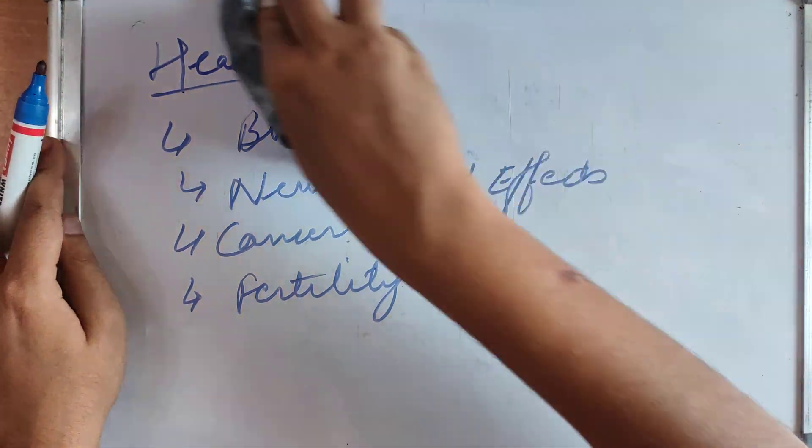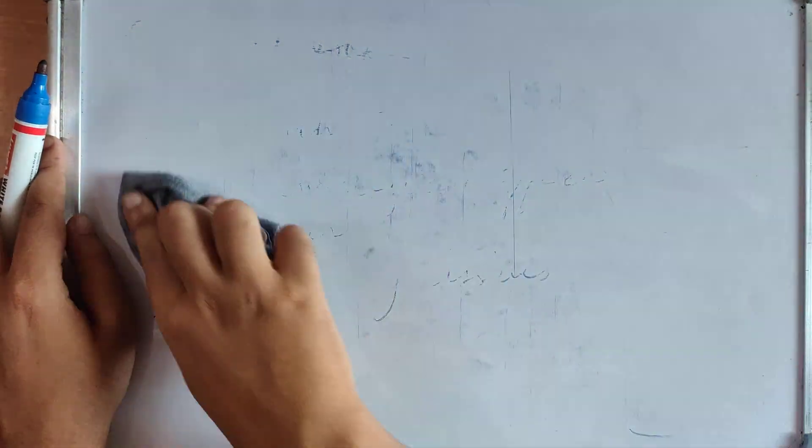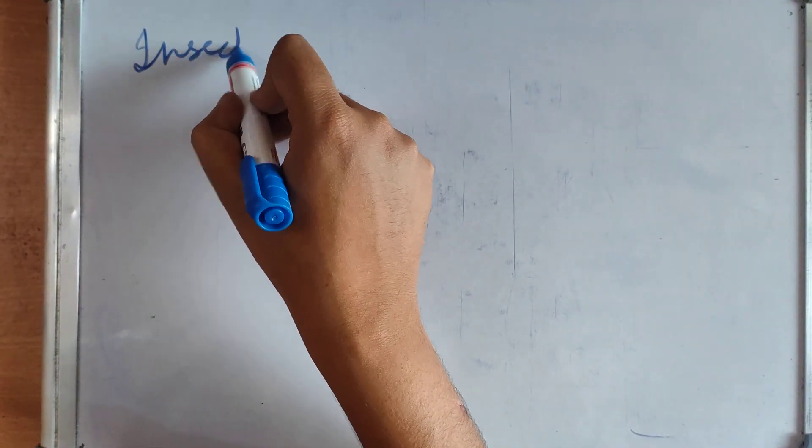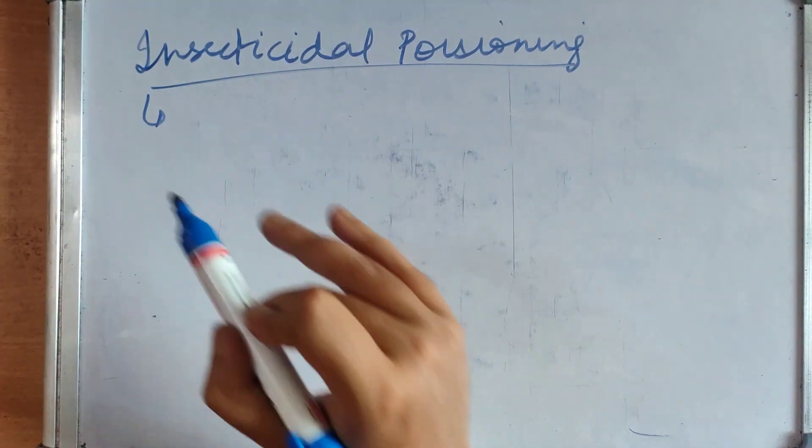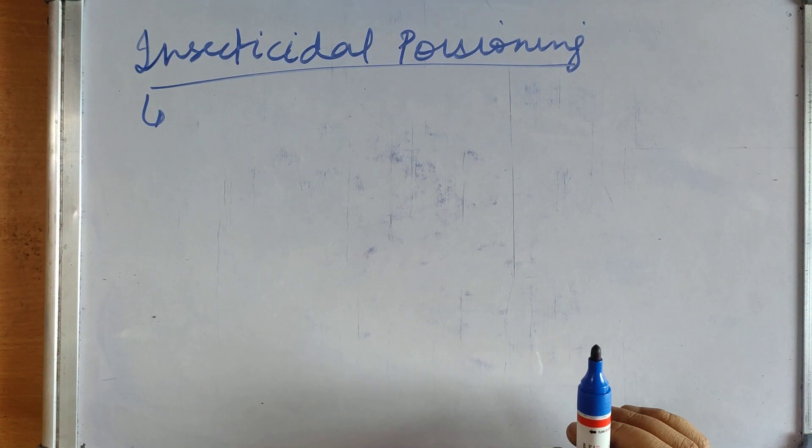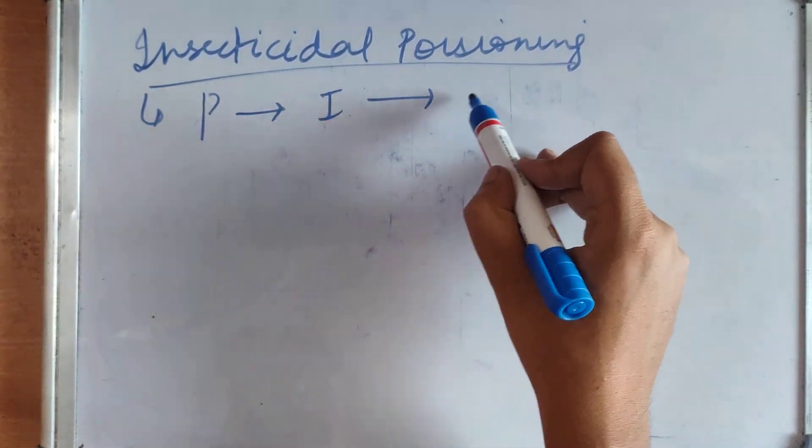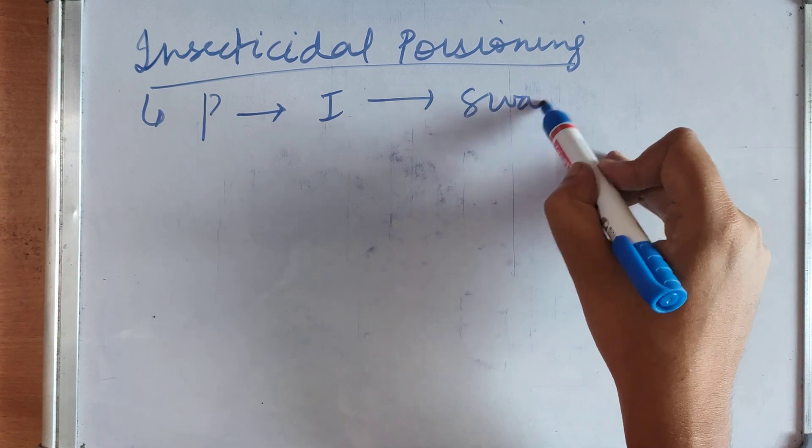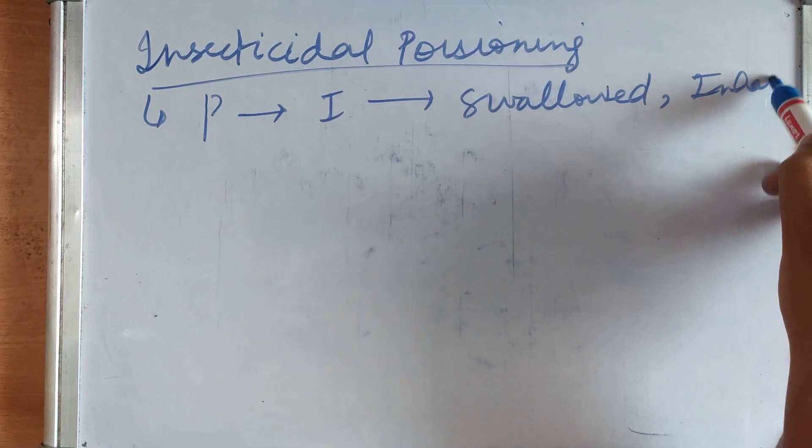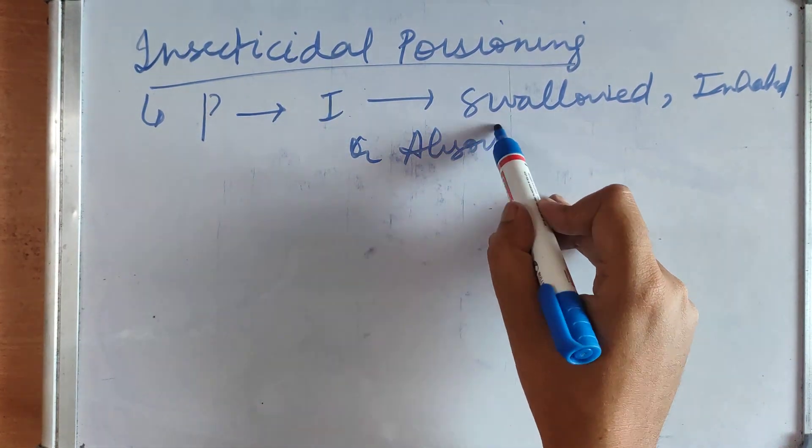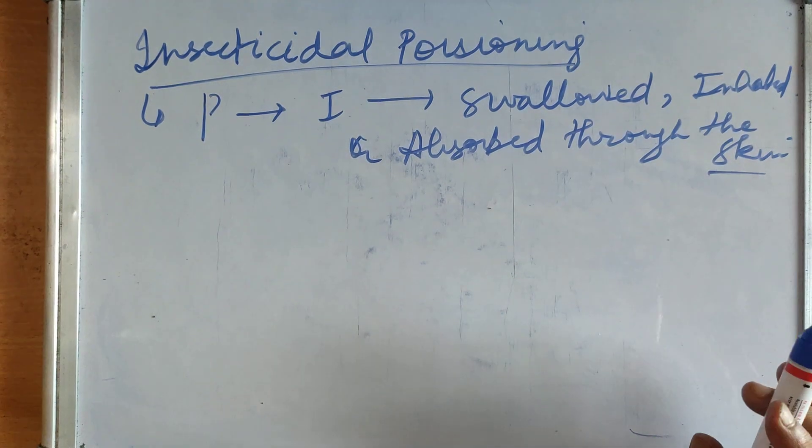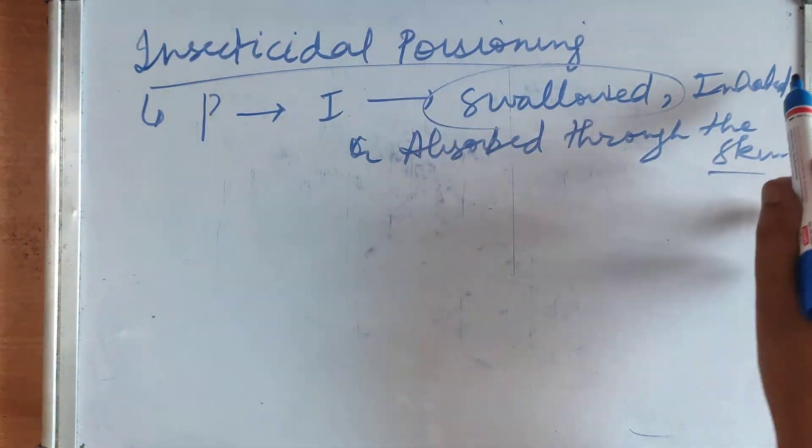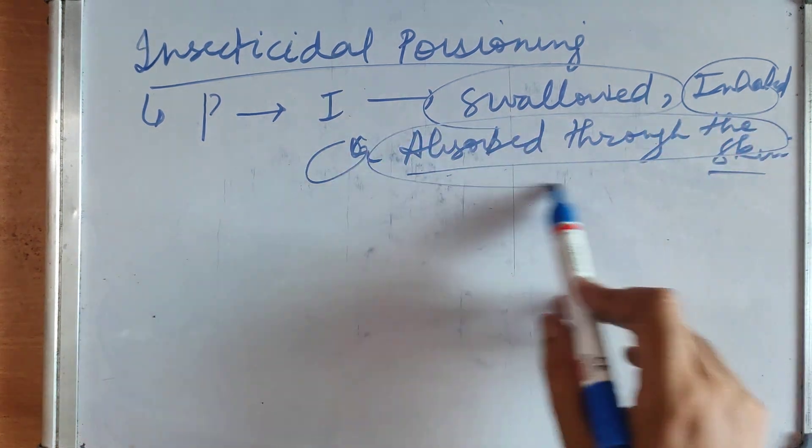Now, moving on to the next topic of this session, that is insecticidal poisoning. Poisoning caused by insecticides after being swallowed, inhaled, or absorbed through the skin. Suppose there was insecticide in a field and you usually eat the fruits of that field, that is through that. Through inhaling of the insecticide, through absorbed or the absorption of insecticide through the skin.